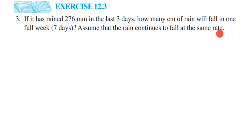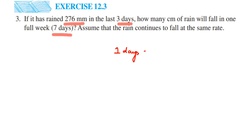Same rate means the speed of rain is the same — sometimes it drizzles, sometimes it pours, but here it is continuously raining at the same rate. For three days it is 276 millimeters, and we have to find out for seven days. To do that, we first find out for one day, and then multiply by seven.